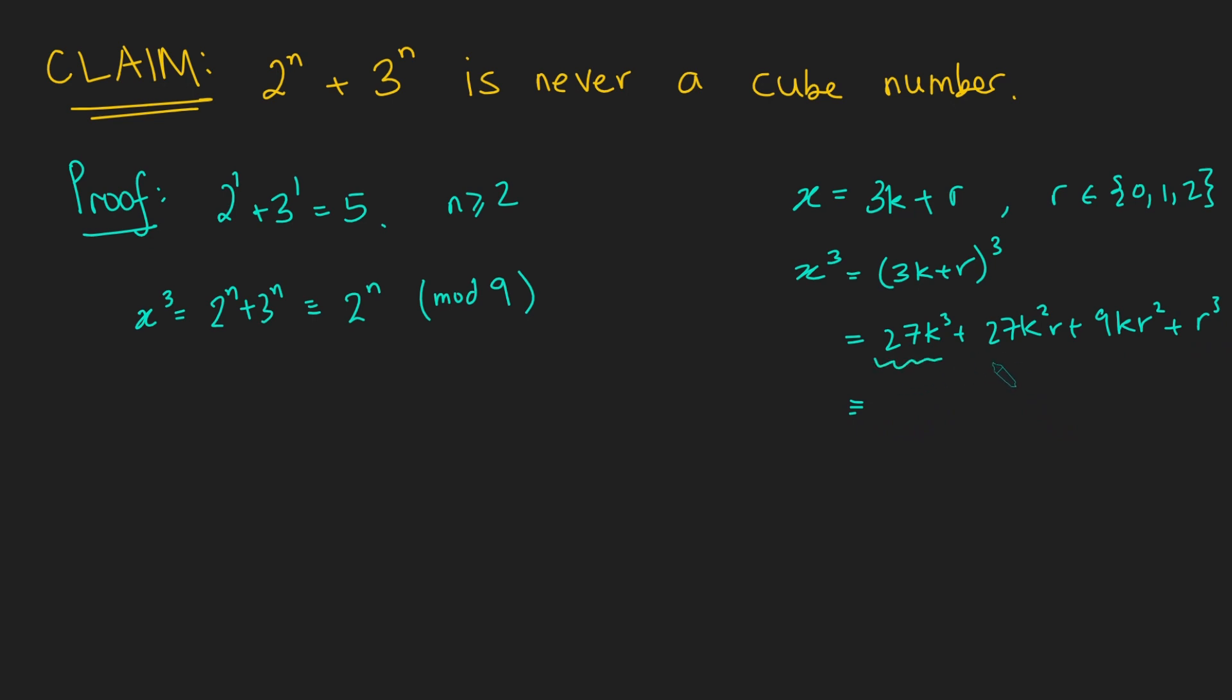And now looking at this mod 9, well, this is a multiple of 9. This is also a multiple of 9. This is a multiple of 9. This guy isn't, so this will just be r cubed. And if r is only 0, 1, or 2, this can either be 0, 1... So 0 cubed is 0, 1 cubed is 1, or 2 cubed, which is 8. But that's the same as minus 1.